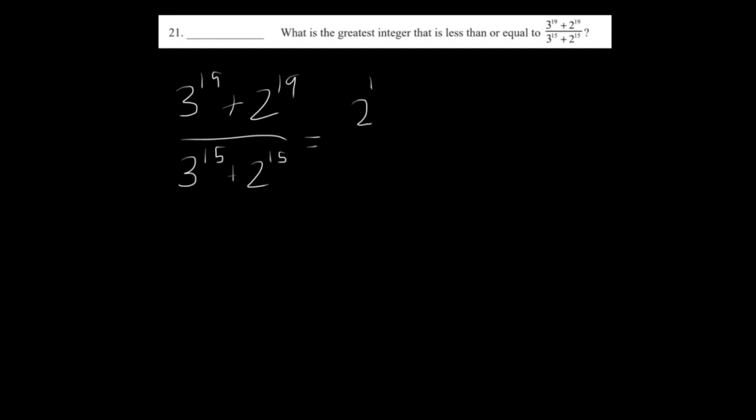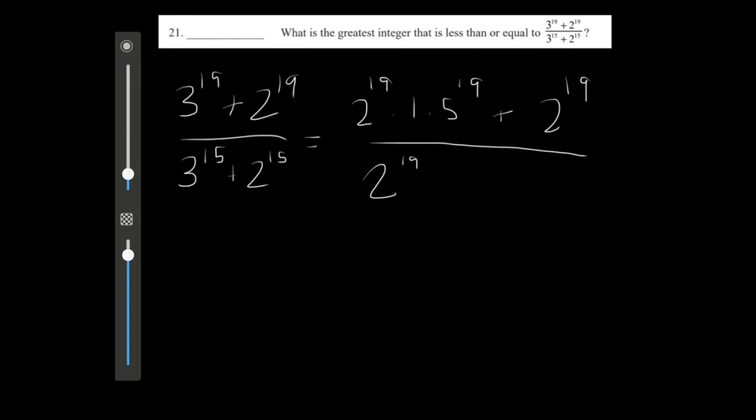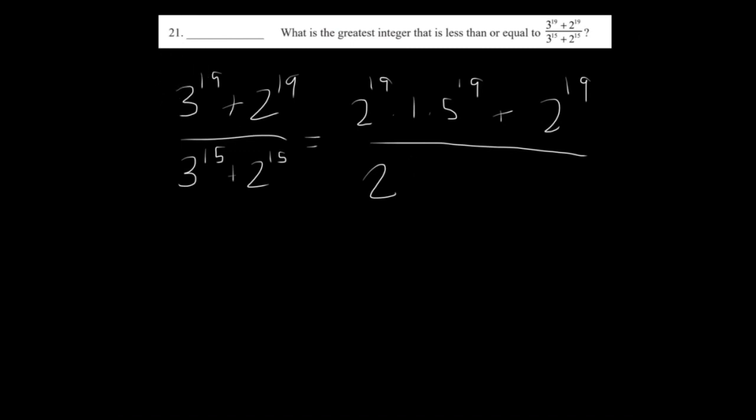It becomes 2 to the 19th times 1.5 to the 19th plus 2 to the 19th over 2 to the 19th... Oh, sorry, 1 to the 15th plus 2 to the 15th. Let's factor it out. This is the key step that I said, factoring.